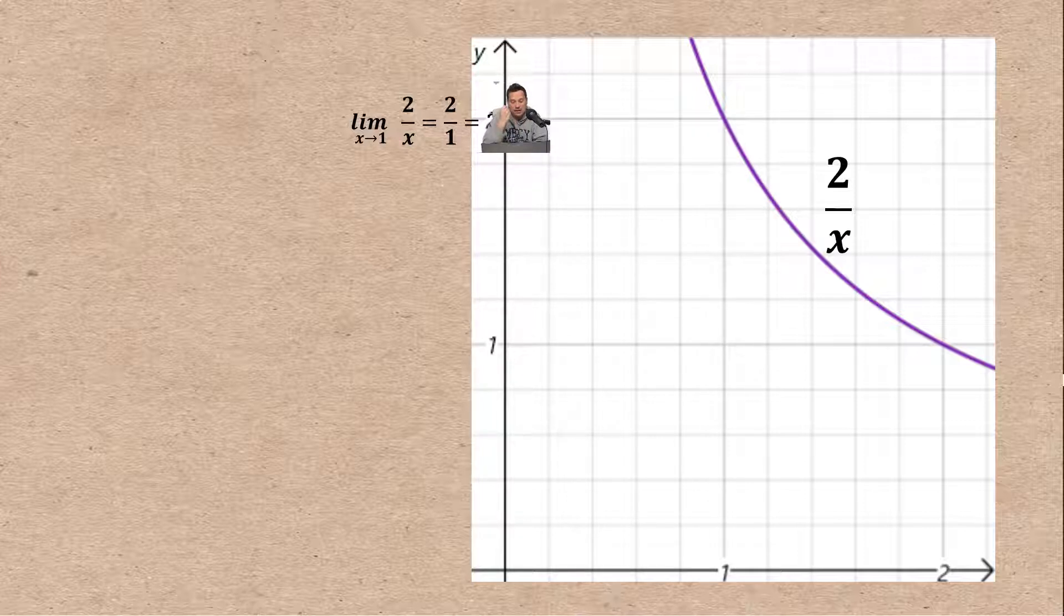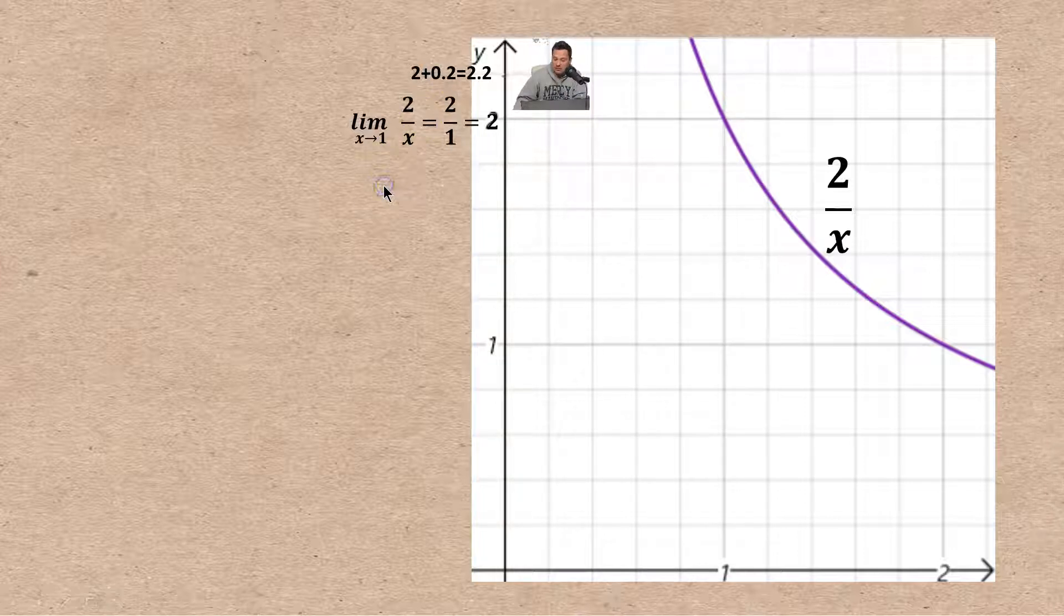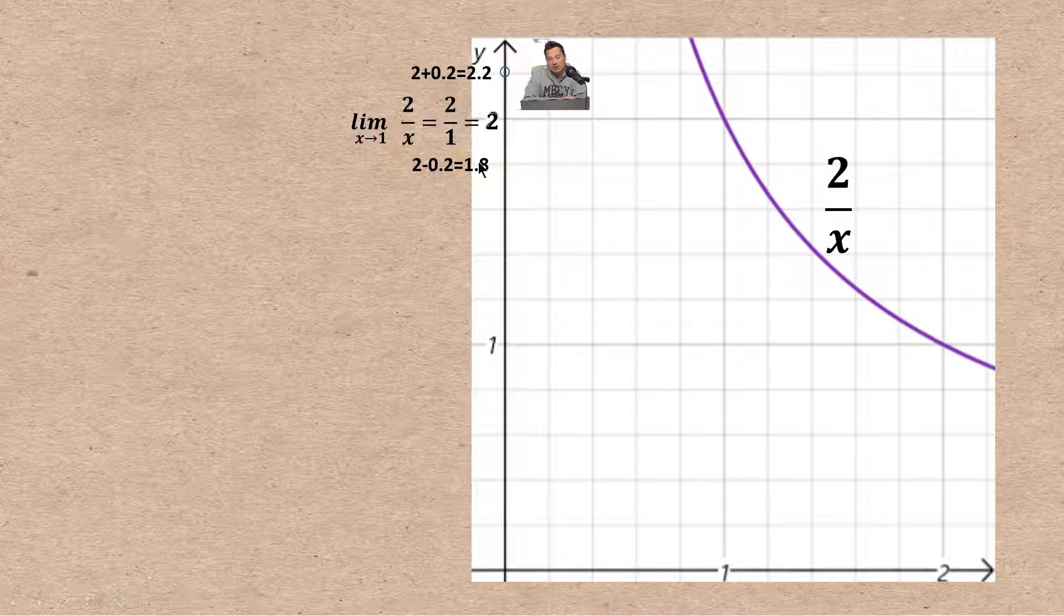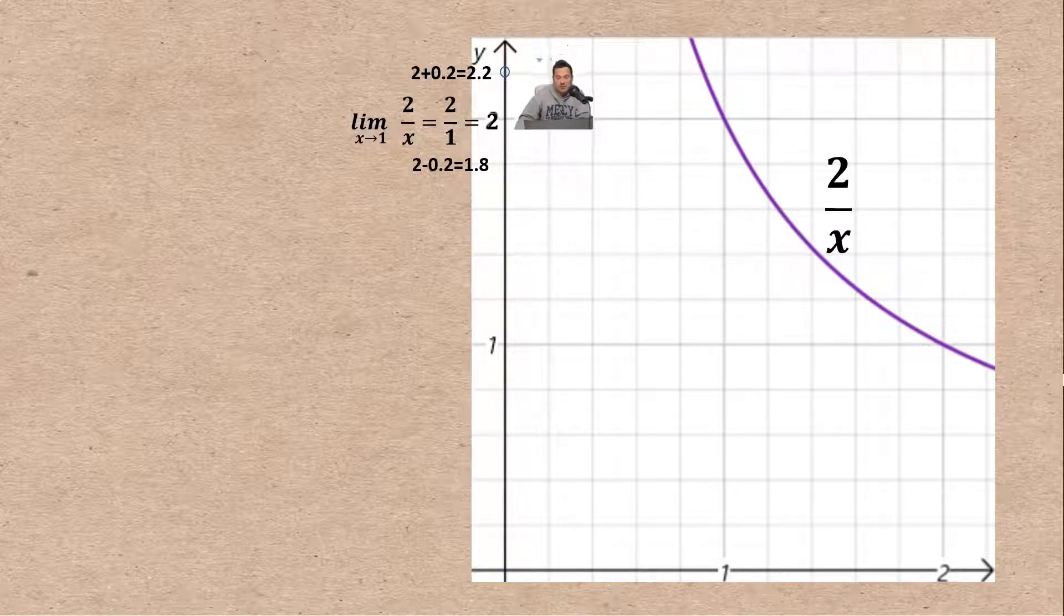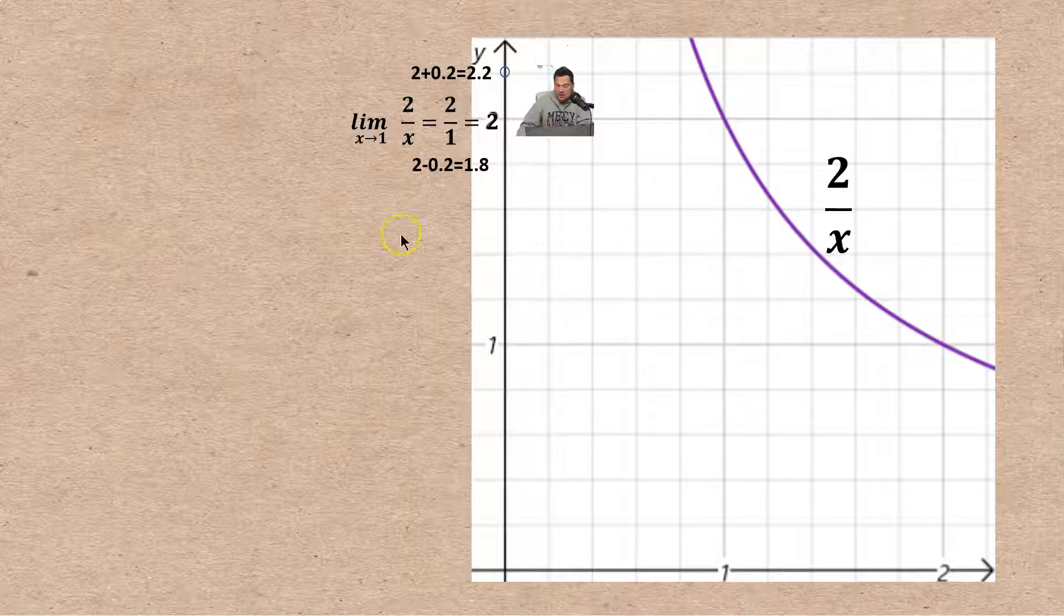As a first step, arbitrarily I'm going to decide that I want the upper limit to be 2.2, that's 2 tenths above the 2, and the lower one 1.8, that's 0.2 below that limit of 2. I want the outputs to stay within this range.